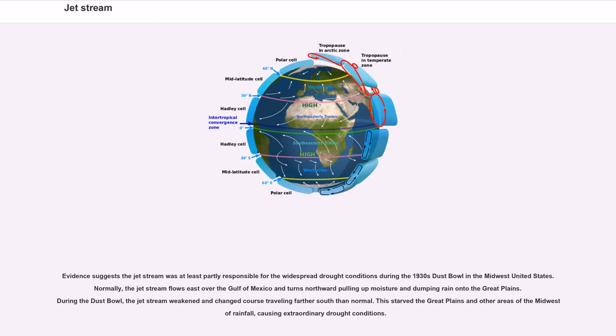Evidence suggests the jet stream was at least partly responsible for the widespread drought conditions during the 1930s dust bowl in the Midwest United States. Normally, the jet stream flows east over the Gulf of Mexico and turns northward pulling up moisture and dumping rain onto the Great Plains. During the dust bowl, the jet stream weakened and changed course traveling farther south than normal. This starved the Great Plains and other areas of the Midwest of rainfall, causing extraordinary drought conditions.